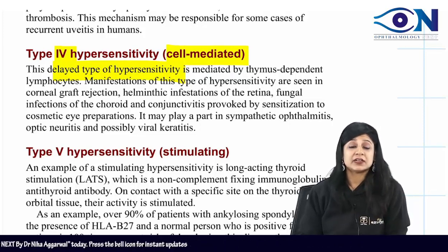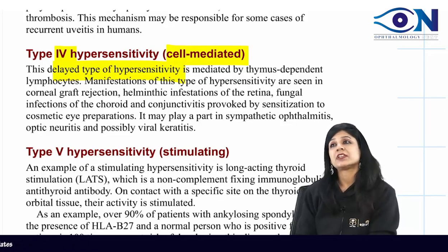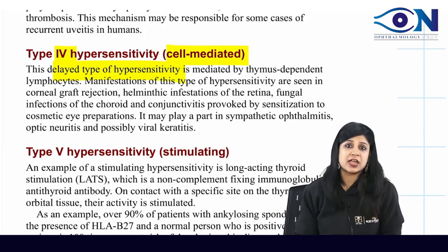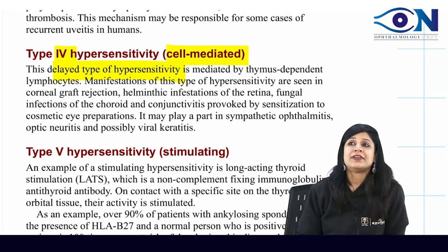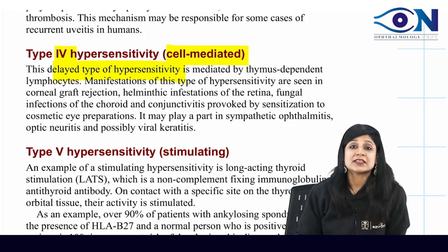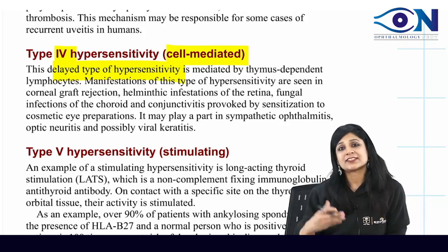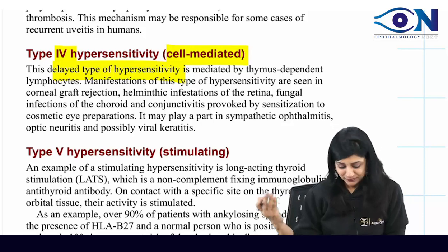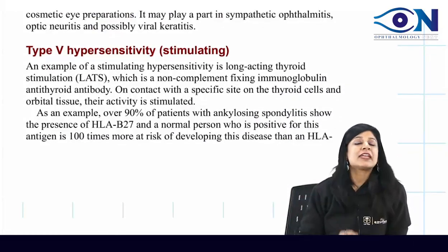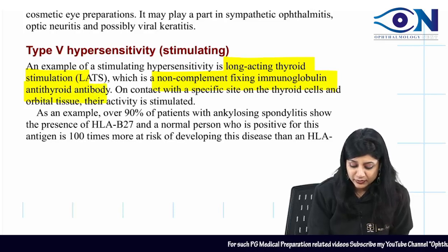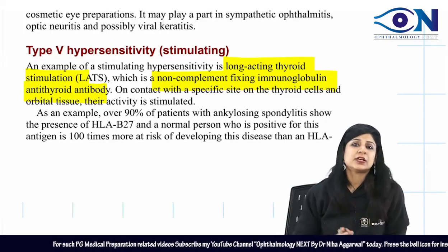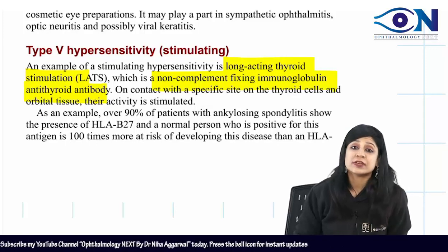VKC is Type 1 mediated — IgE immediate hypersensitivity. We also have Type 4 delayed hypersensitivity. Some books say VKC is Type 1 plus Type 2, and some say Type 1 plus Type 4. Then there is also a Type 5 hypersensitivity reaction — long-acting thyroid stimulation, which is a non-complement-fixing immunoglobulin antithyroid antibody. So there are many hypersensitivity reactions involved in the eye.